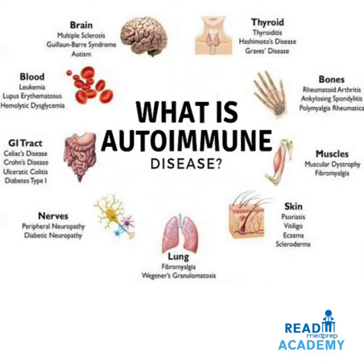Different organs affected by autoimmune disorders include the brain — multiple sclerosis, Guillain-Barré syndrome, and autism; the thyroid — thyroiditis, Hashimoto's disease, and Graves' disease; the bones — rheumatoid arthritis, ankylosing spondylitis, polymyalgia rheumatica; muscles — muscular dystrophy and fibromyalgia; skin — psoriasis, vitiligo, eczema, and scleroderma; lungs — pulmonary fibrosis; nerves — peripheral neuropathy and diabetic neuropathy; GI tract — celiac disease, Crohn's disease, ulcerative colitis, and type 1 diabetes; blood — leukemia, lupus erythematosus, and hemolytic conditions.